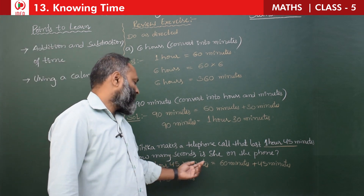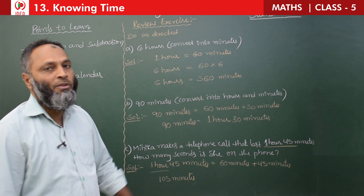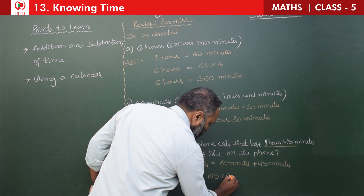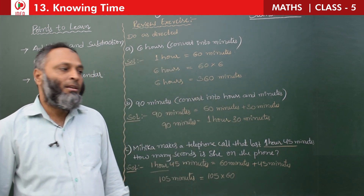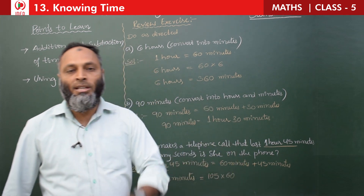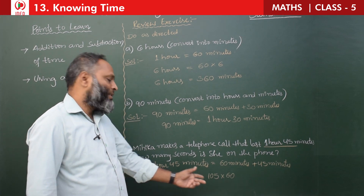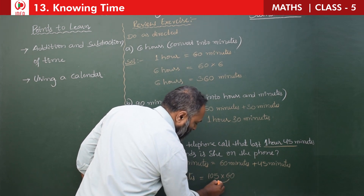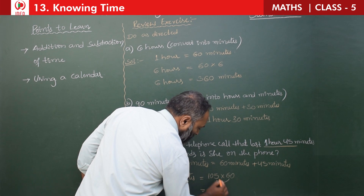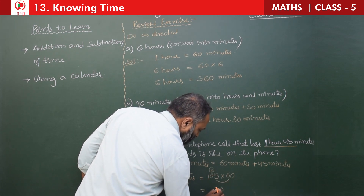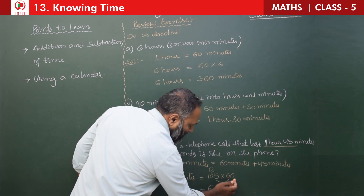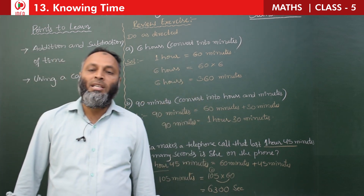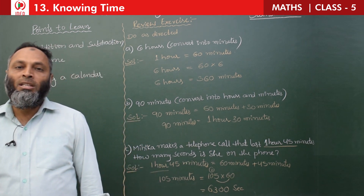Now convert 105 minutes into seconds. Since 1 minute equals 60 seconds, we multiply 105 × 60. Multiply: 6 × 5 = 30, write 0 carry 3; 6 × 0 = 0, plus 3 = 3; 6 × 1 = 6. So the answer is 6,300 seconds. In 6 hours, Mihika is on the phone for 6,300 seconds.